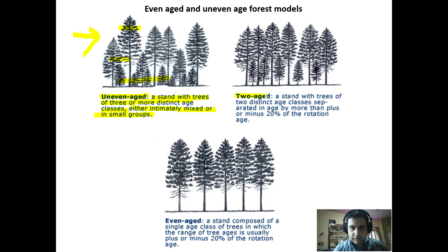Now let's look at the two-aged stand. It is a stand with trees of two distinct age classes separated in age by more than plus or minus 20 percent of the rotation age. As you can see in this two-aged model, there is one tier of trees and a second tier of trees.